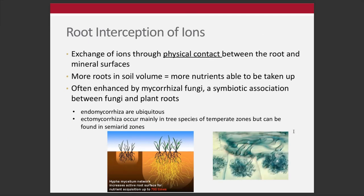Root interception of ions is through physical contact between the root and the mineral surface. As the root grows, it's essentially plucking ions off mineral surfaces. This is not a particularly common way for uptake with primary root structures, but that's why we have root hairs. Mycorrhizal fungi is another common strategy that plants use to essentially increase their nutrient foraging capacity. The more roots in soil, the more soil volume accessed and the more nutrients that can be taken up.